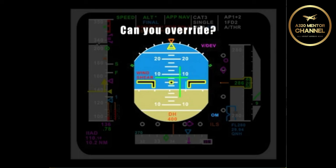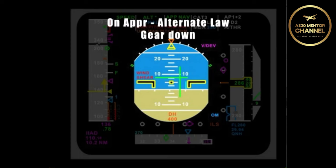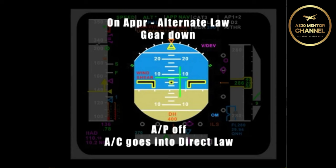Can you override that protection? Absolutely. You are on approach in alternate law. You put the gear down, what will occur? When you put the gear down with the autopilot off, the aircraft goes into direct law.